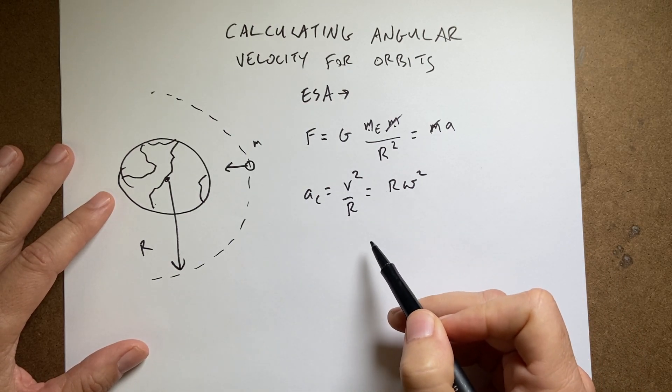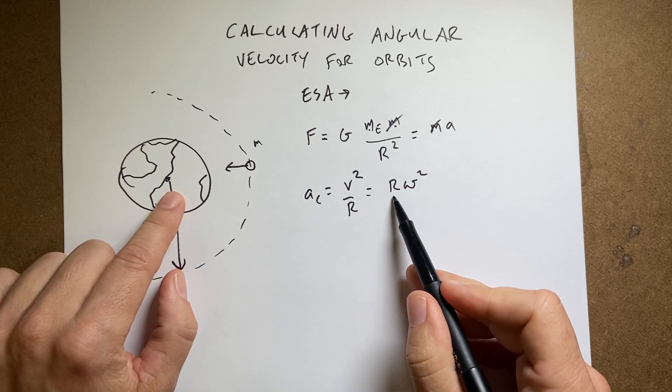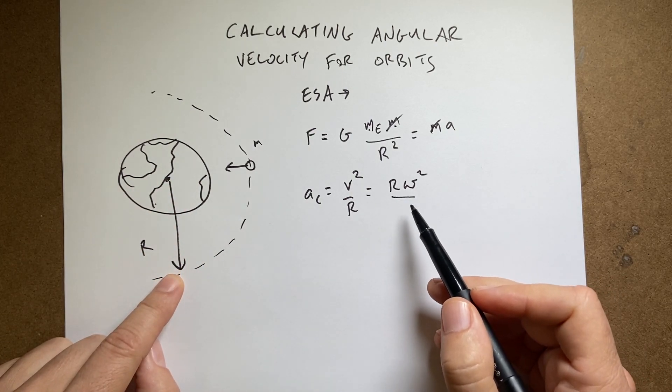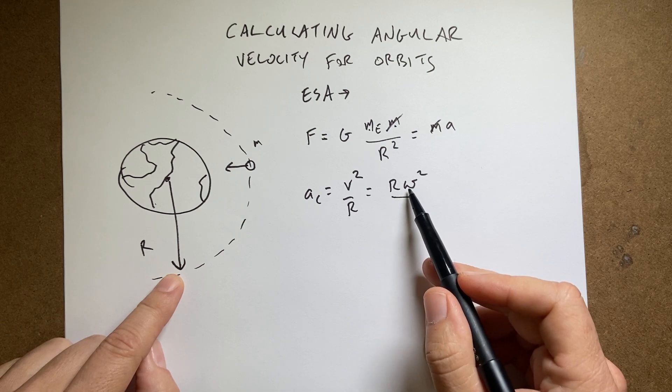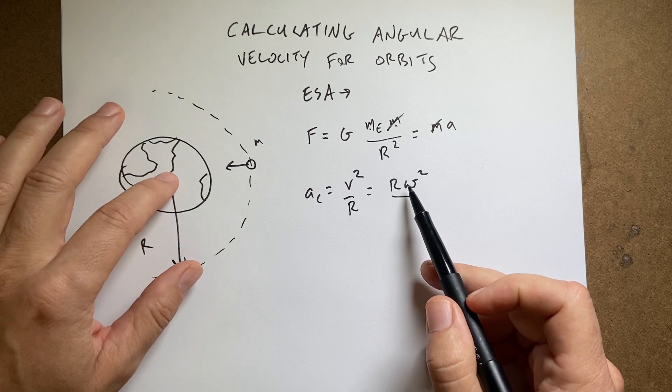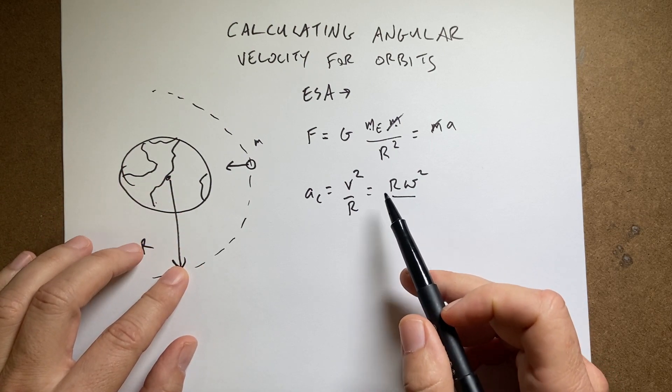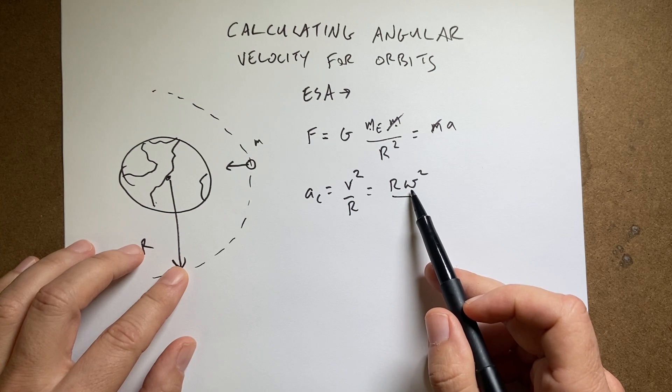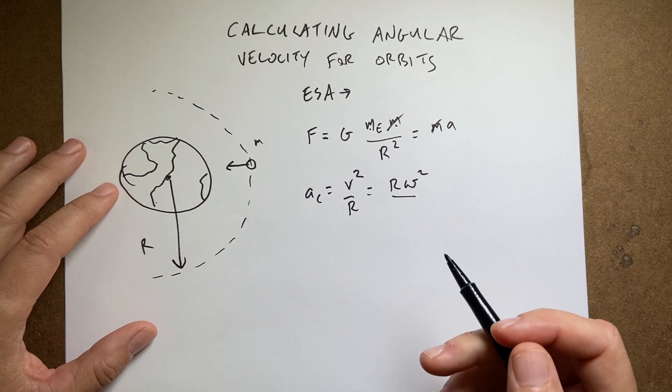So according to this, if you're moving in a circle and you increase the radius, you would increase the acceleration. If you increase the angular velocity, you would increase the acceleration. Okay, that's fine. Think of it that way.